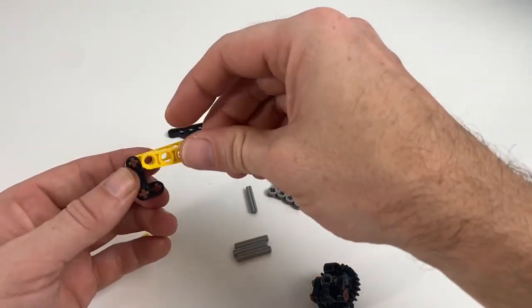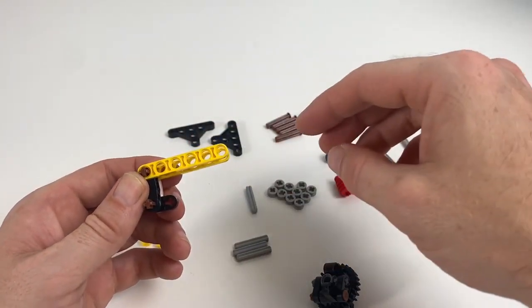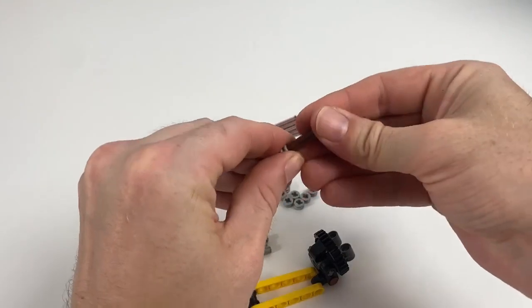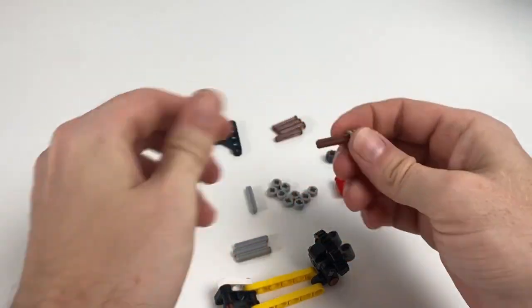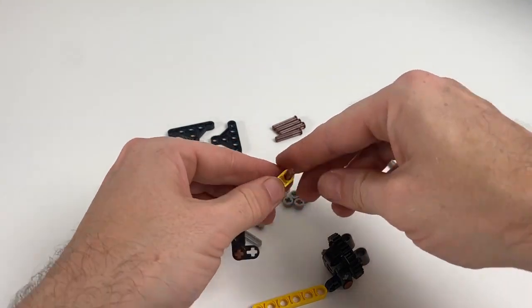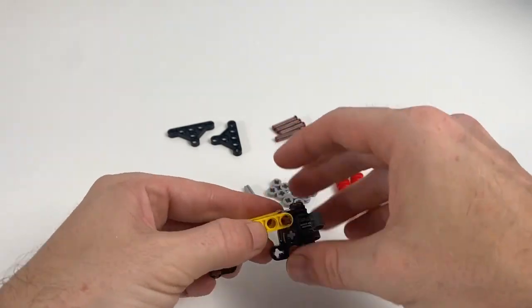In this particular build, I've actually used some different axles with stops on them, different at least to the original video creator Max Bricks. I just found that they're a little bit neater, but you could equally just use axles without a stop. To be honest, it really wouldn't make too much difference. That being said, there are quite a lot of these little axles that you need for this build.